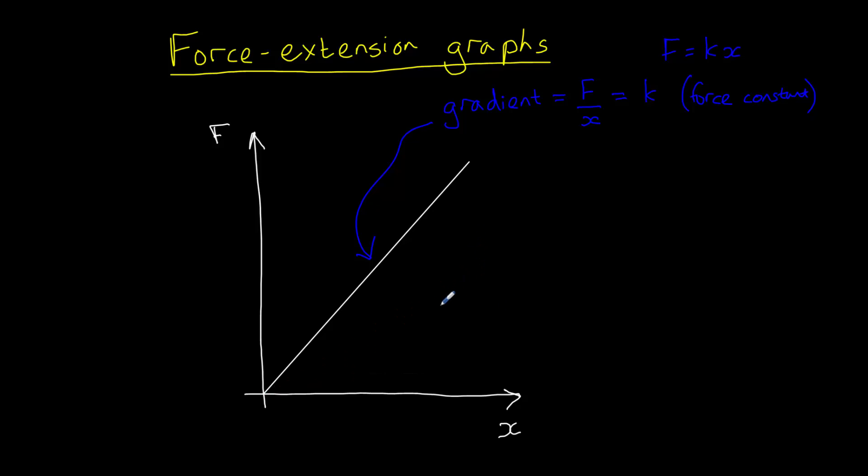The second feature of a force extension graph is related to the area underneath it. The area under a force extension graph is equal to the elastic potential energy stored in the spring. As you can see, the more force is applied or the more extension that the spring undergoes, the greater the stored energy within that spring or within that material.